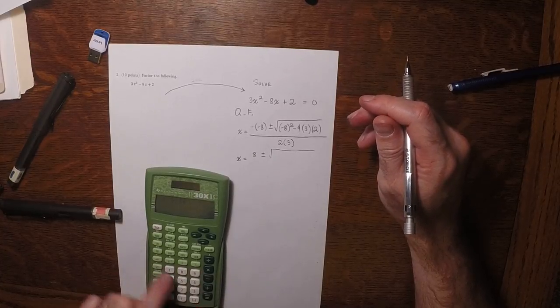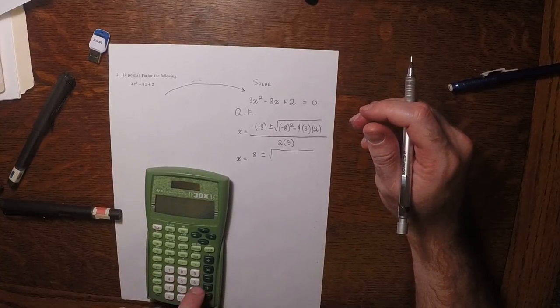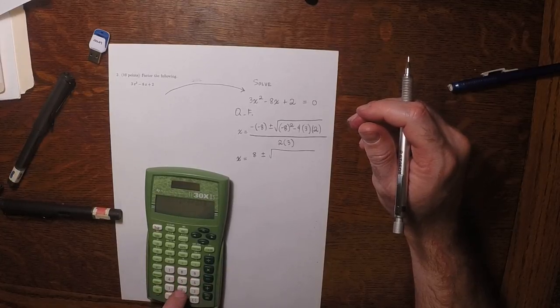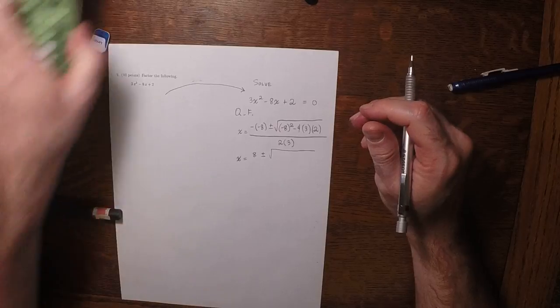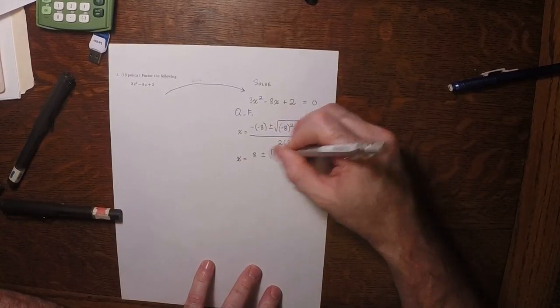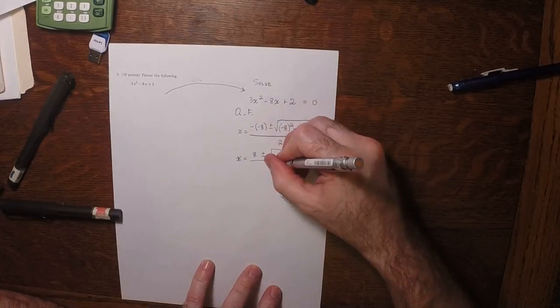Negative 8 squared minus 4 times 3 times 2. Yeah, good. So square root 40, and then all over 6.